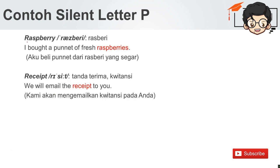Tadi ada kata cupboard, dan disini ada kata raspberry. Raspberry. I bought a punnet of fresh raspberries. Aku beli punnet dari raspberry yang segar. Lalu, receipt — tanda terima, kuitansi. We will email the receipt to you. Kami akan mengirimkan kuitansi kepada Anda.